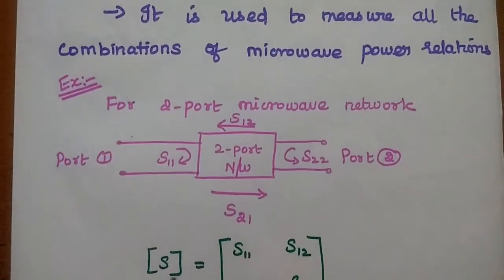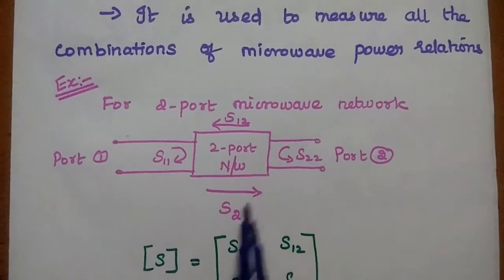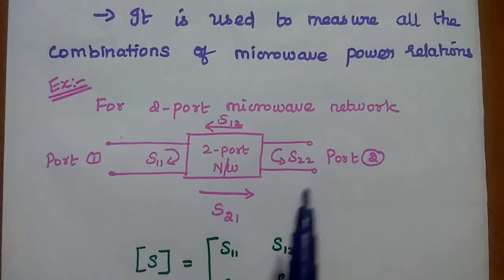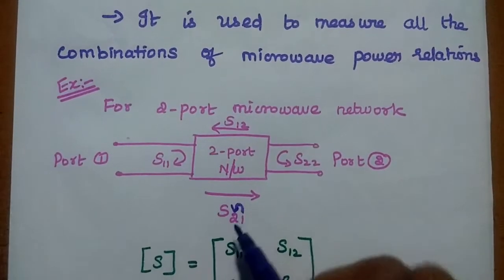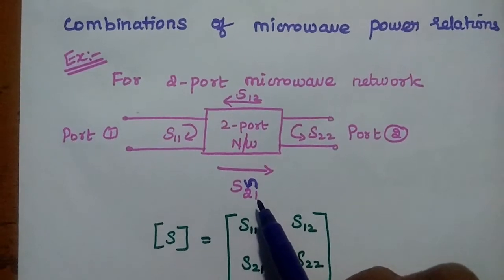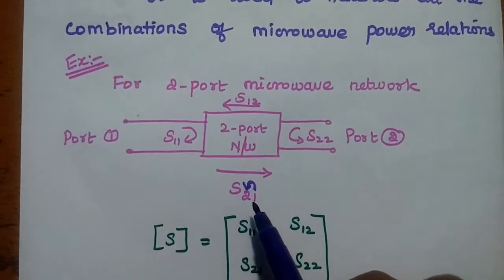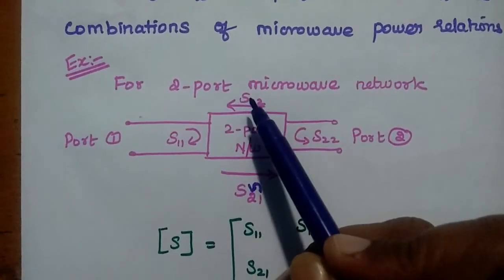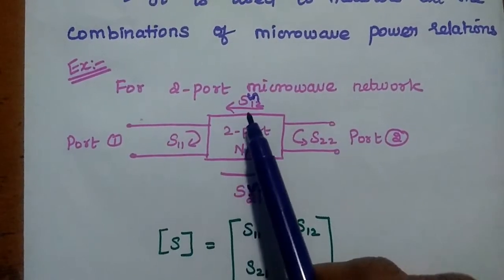As an example, consider a two-port microwave network with port 1 and port 2. The signal traveling from port 1 to port 2 is represented as S21. S21 represents the signal flowing or passing from the first port to the second port — note the ports are mentioned in reverse order. In the reverse direction, the signal flow is represented as S12, meaning the flow of signal from the second port to the first port.